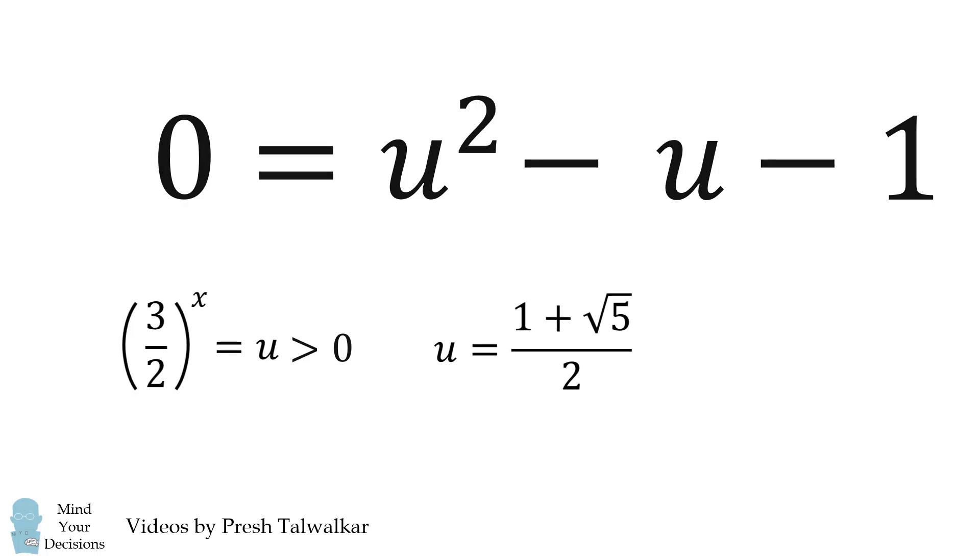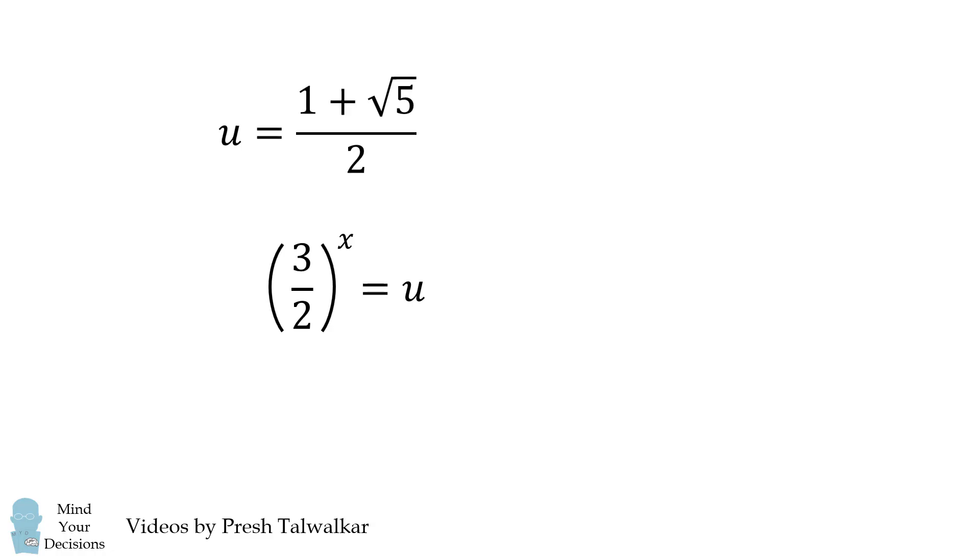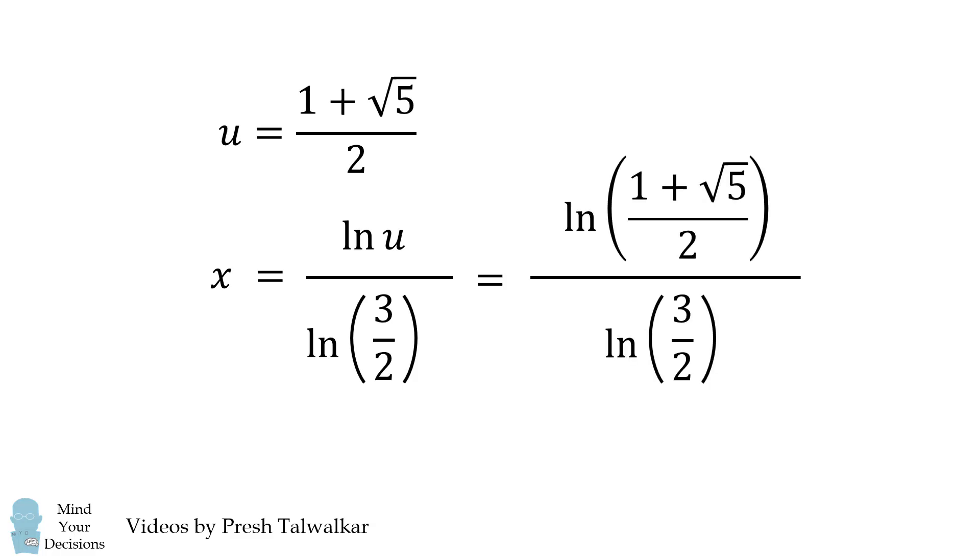But we're not done yet. We want to solve for x. Since 3 halves raised to the power of x is equal to u, we want to solve for x by taking the natural log of both sides. We can then bring the exponent down, and then solve for x by dividing by the natural log of 3 halves.